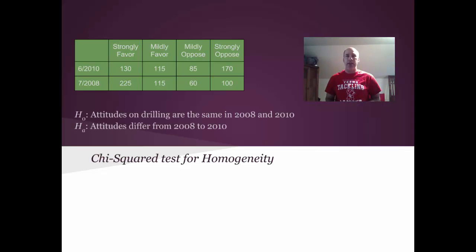The chi-squared test for homogeneity. Our null hypothesis is that attitudes on drilling are the same in 2008 and 2010. And the alternate hypothesis is somehow attitudes are different, that at least one of the proportions in the columns has differed.